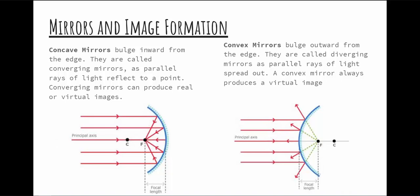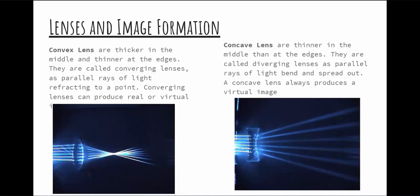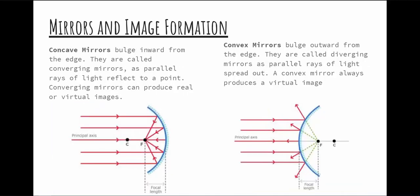Now we have mirrors — a concave and a convex mirror. I'll call them by their light rays: the concave is a converging mirror, and the convex is a diverging mirror. A converging lens can make both real and virtual images — it just depends on where the object is. A diverging lens only makes virtual images. Similarly, a converging mirror can make both real and virtual images, while the diverging mirror only makes one type.